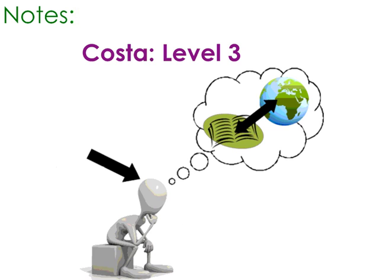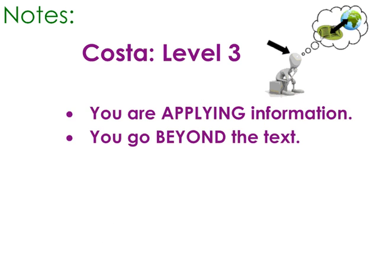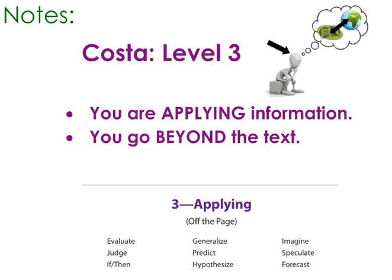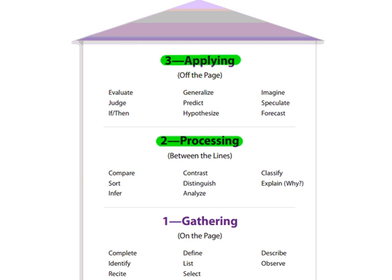Level two thinking may also ask you to analyze or explain why something is happening. Level three thinking involves the text and your brain, but also the ability to go beyond the text to the real world. You are applying the information and going outside the text. Level three questions might involve words like imagine, speculate, forecast, generalize from specifics, make a prediction or hypothesis, or evaluate and judge something.